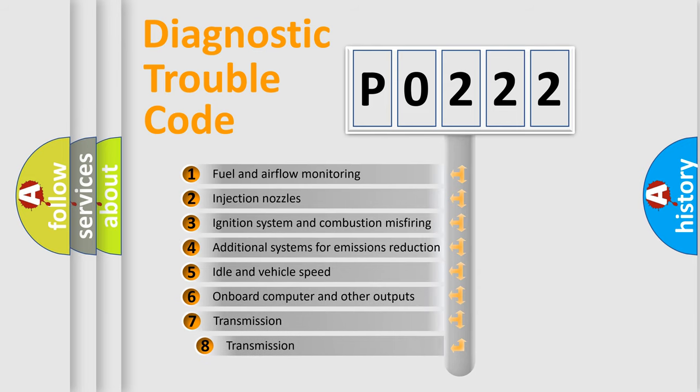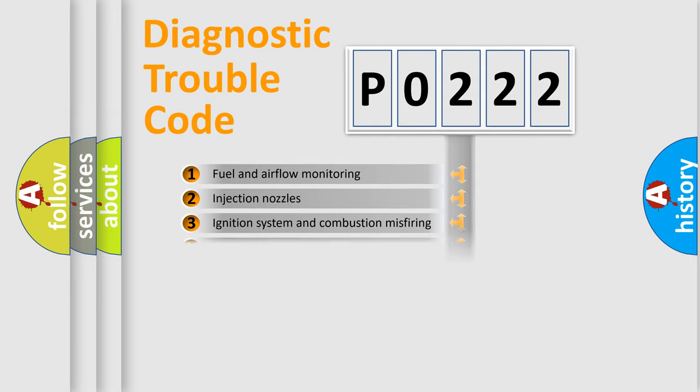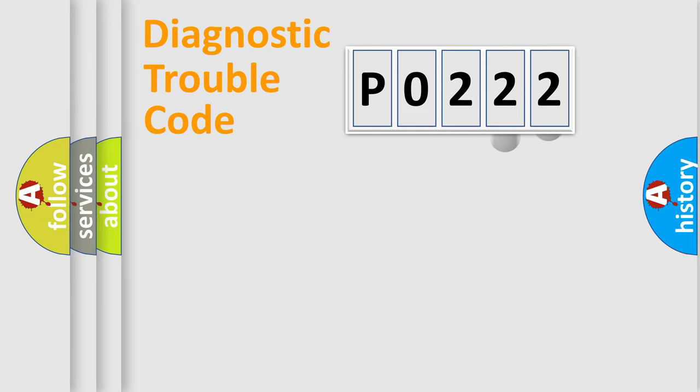The third character specifies a subset of errors. The distribution shown is valid only for the standardized DTC code. Only the last two characters define the specific fault of the group.